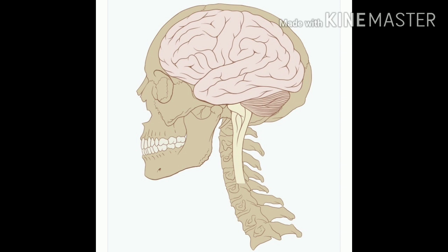All of you, look at the picture of a brain protected inside the skull. Do you know how many layers are covering our brain? It is covered by meninges, a three-layered membrane. Inside this, there is a fluid called cerebrospinal fluid.